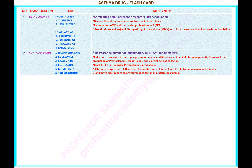Number 2 — name of the classification: corticosteroids. Drugs under this classification: 1) beclomethasone, 2) mometasone, 3) ciclesonide, 4) fluticasone, 5) mometasone, 6) triamcinolone.